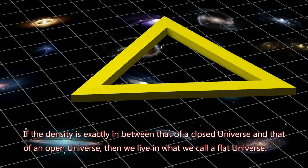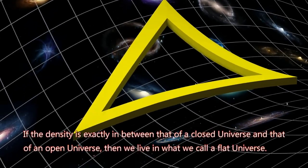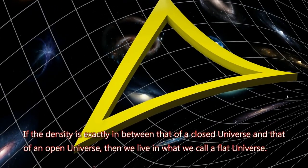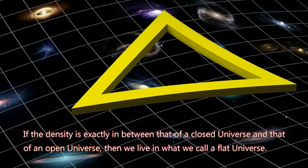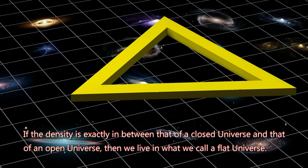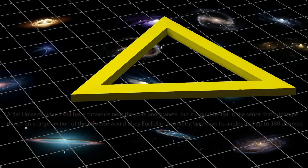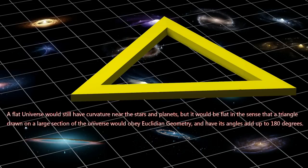If the density is exactly in between that of a closed universe and that of an open universe, then we live in what we call a flat universe. A flat universe would still have curvature near the stars and planets, but it would be flat in the sense that a triangle drawn on a large section of the universe would obey Euclidean geometry, and have its angles add up to 180 degrees.